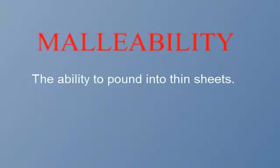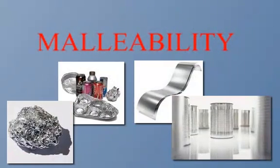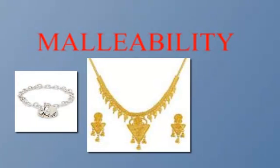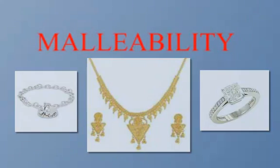Malleability is the ability to pound into sheets. Aluminum is very malleable — you can pound it into sheets. Gold is malleable, and we can make it into jewelry. Silver and platinum are malleable. Iron is malleable if you get it hot enough. A lot of metals are malleable.